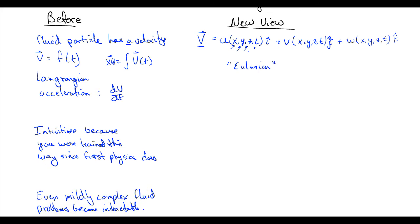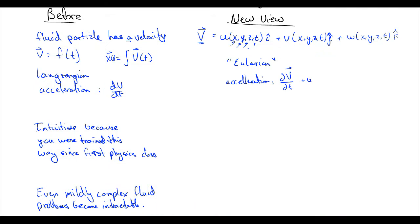Here, our acceleration becomes more complicated. Our acceleration is now, and we'll derive this, the partial of v with partial of t, plus u du/dx, plus v dv/dy, plus w dw/dz. This is called the total derivative of the velocity. We'll get into that a little bit later.